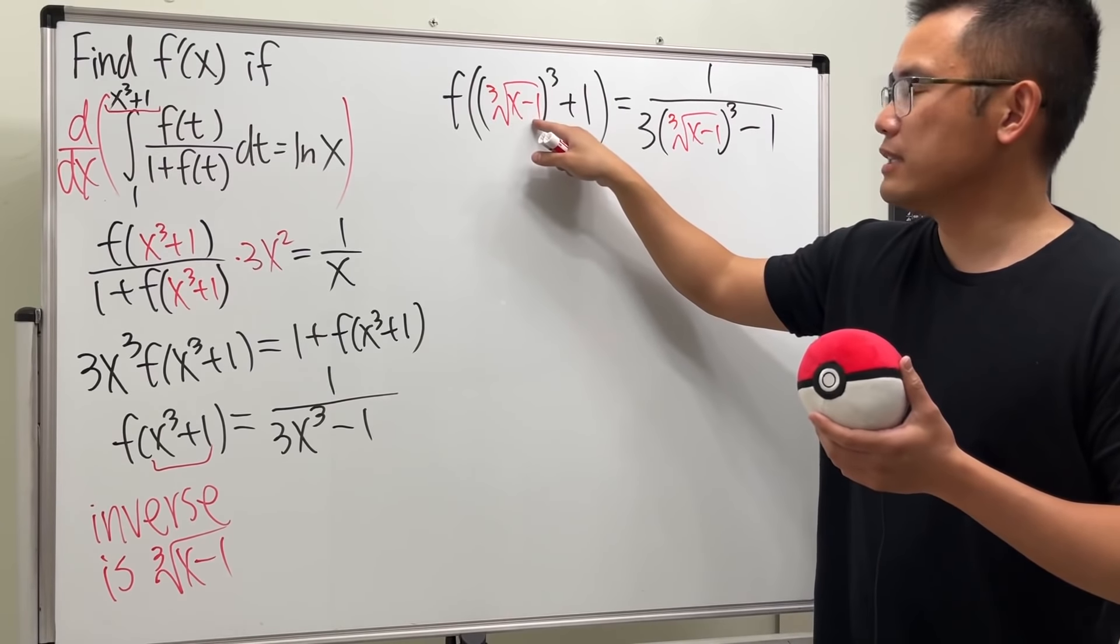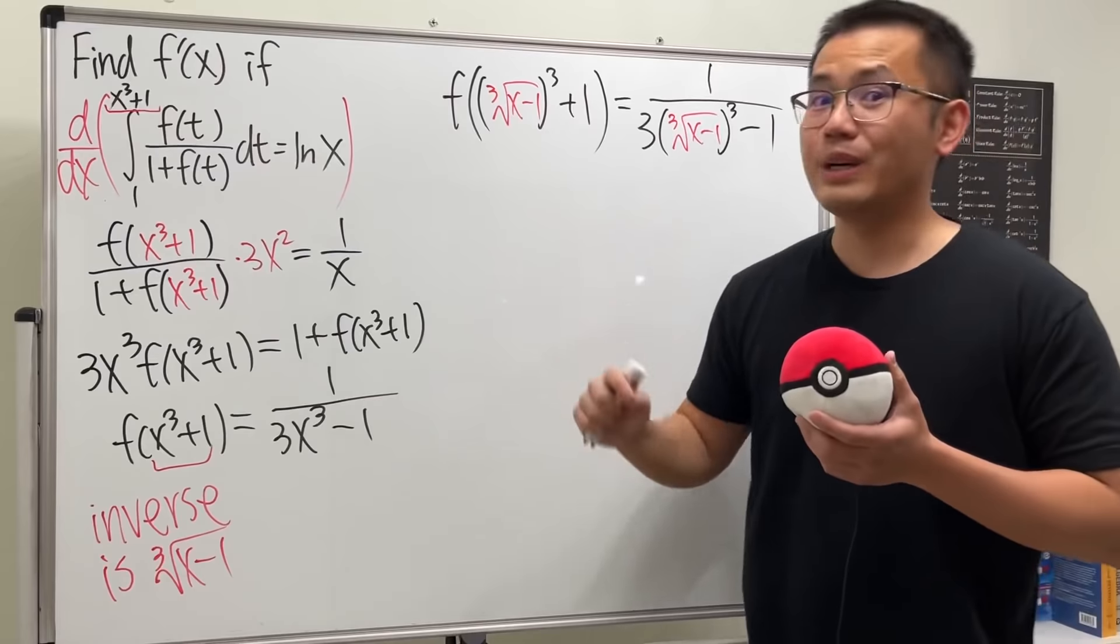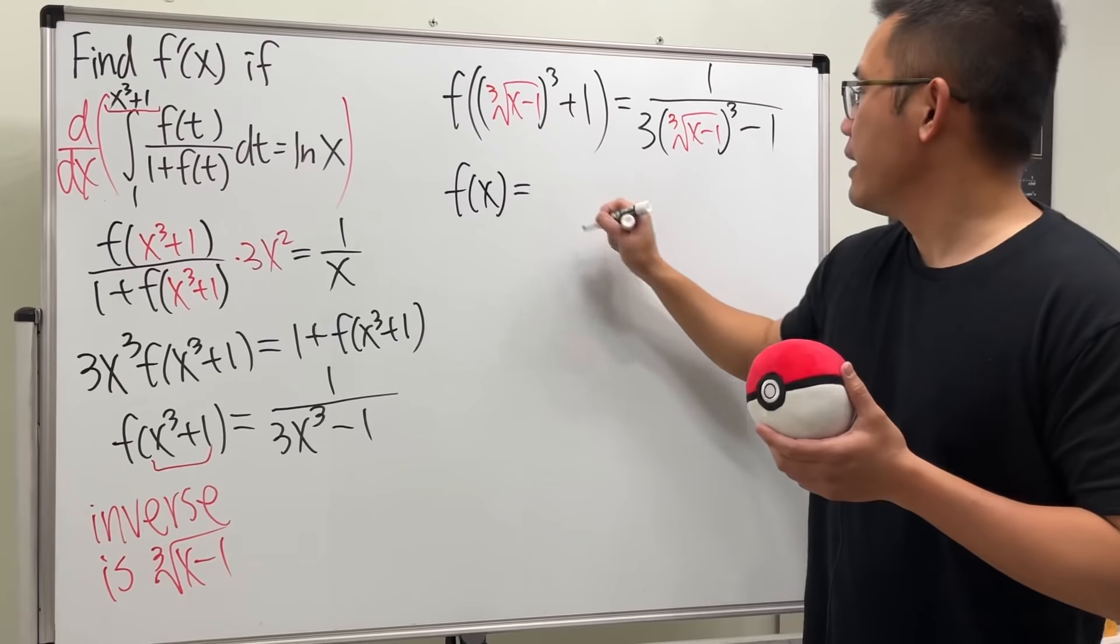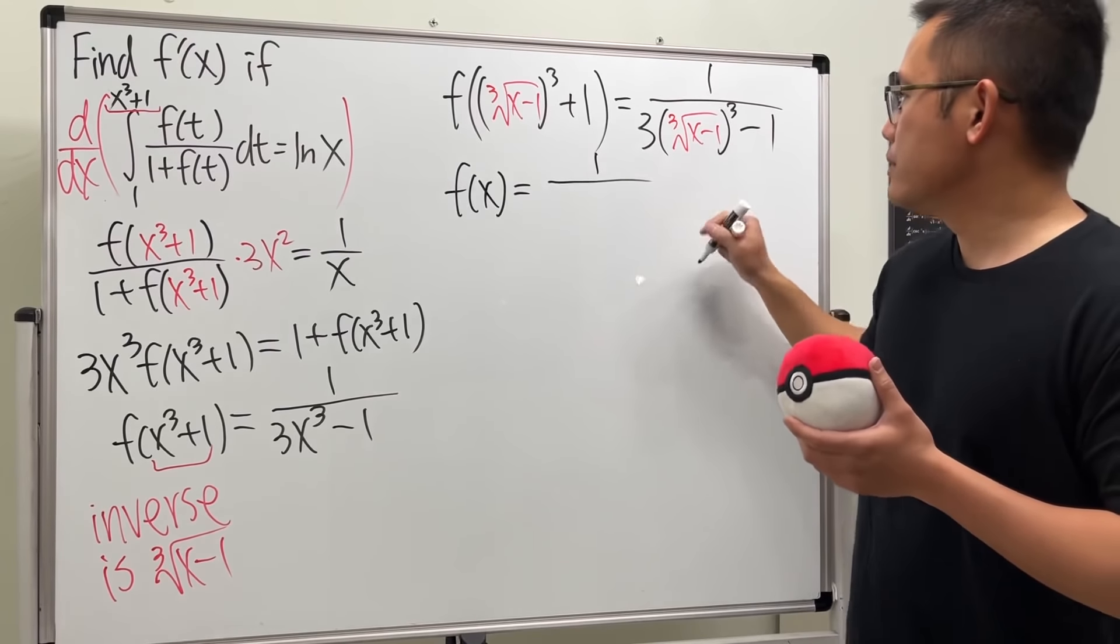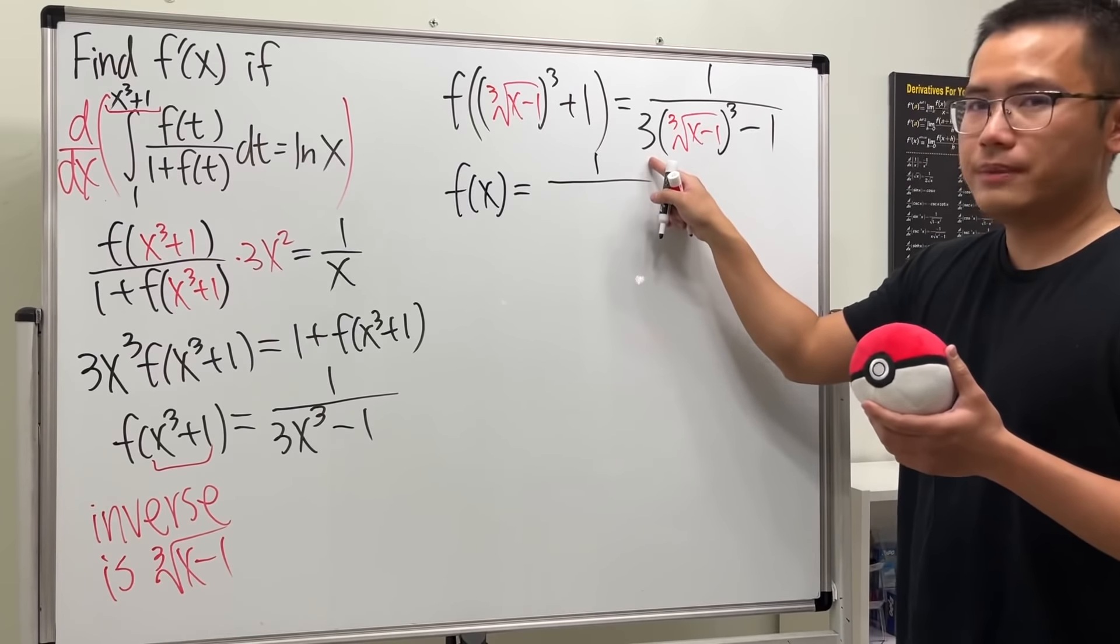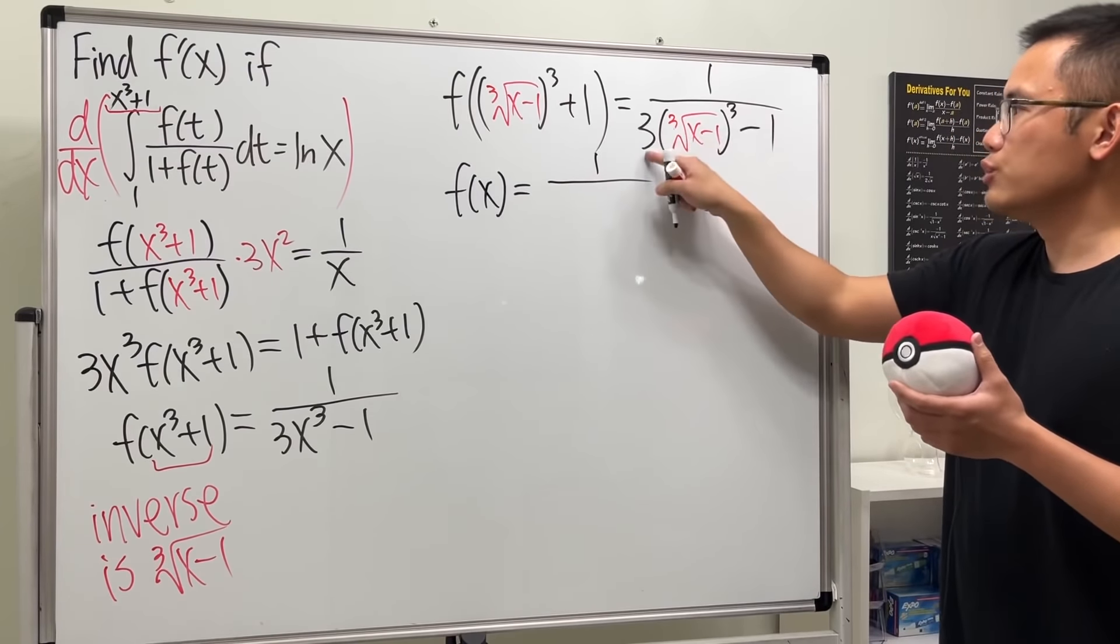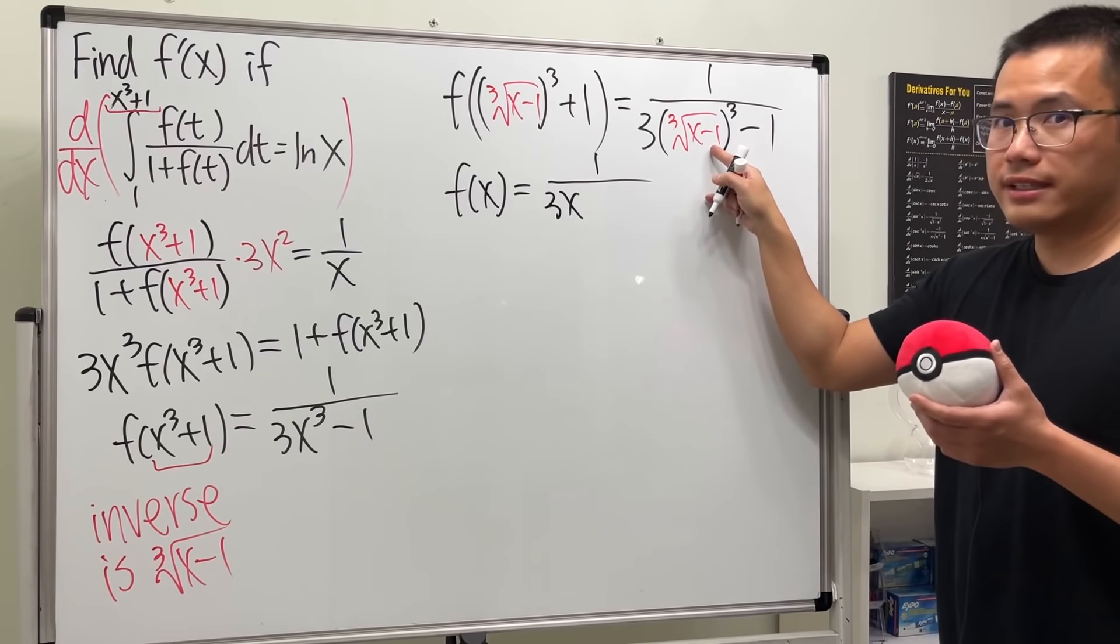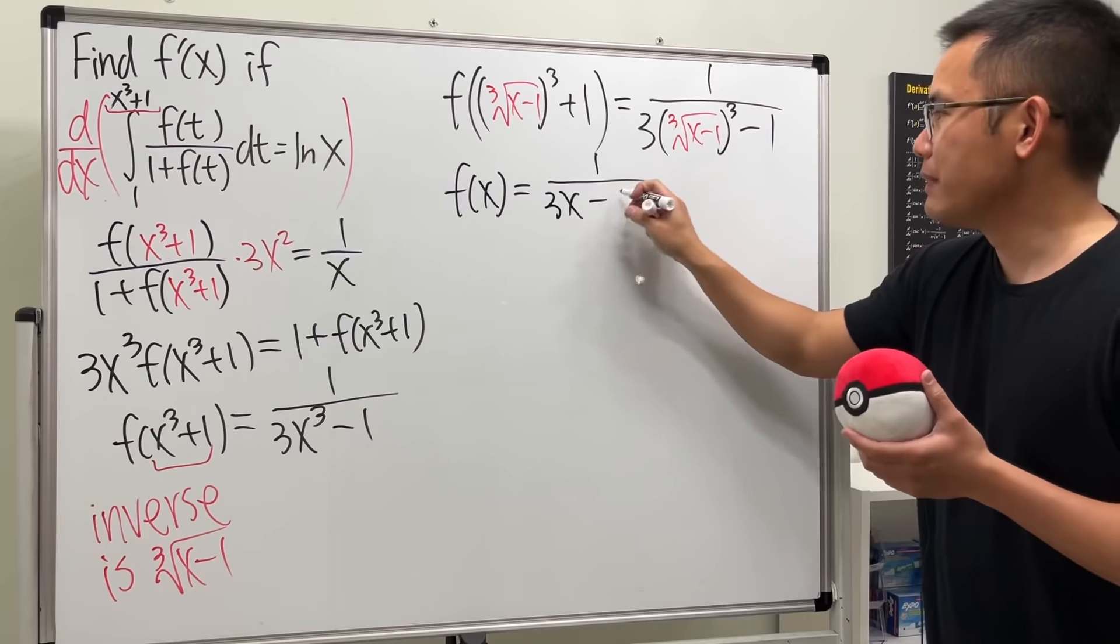This and that cancel. We have x - 1 plus 1. Aha! We do get the x, right? So that's very nice. So we have f(x). On the right-hand side, we have 1 over. And here we have 3. Cube root of the nut cancel. So 3 times x, which is 3x. And then 3 times -1, which is -3. And then minus 1. So we have minus 4.